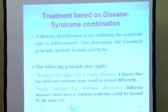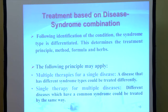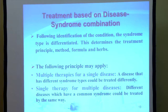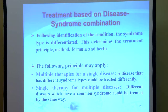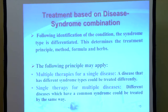Following identification of the condition, the syndrome type is diversified. This determines the treatment principle, methods, formula and herbs. One principle is multiple therapies for a single disease — a disease with different syndrome types could be treated differently. The other principle is single therapy for multiple diseases — different diseases which share a common syndrome could be treated the same way.